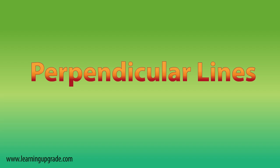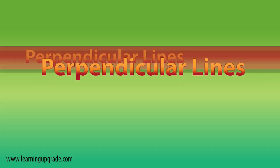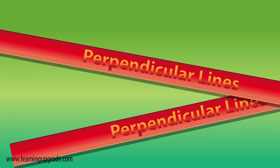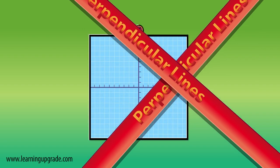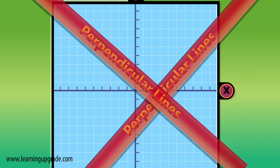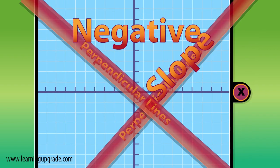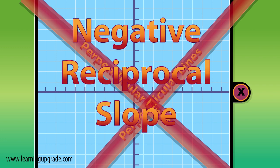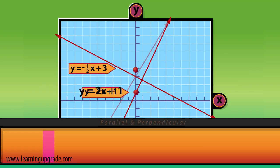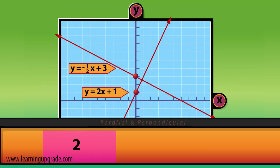Perpendicular lines cross at right angles. Perpendicular lines have negative reciprocal slopes. For y equals 2x plus 1,